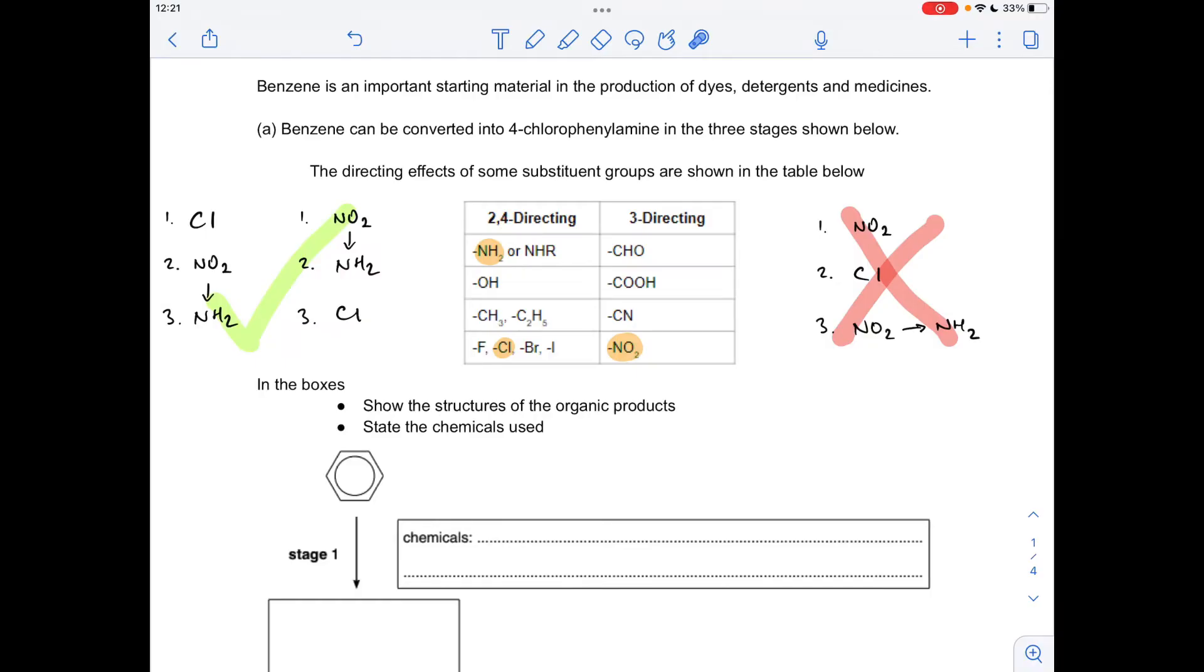So if you look at the way you can't do it, if you put the nitro group on first but then try and put the chlorine on, you can see the nitro group is a 3 directing group. So you're going to end up with the chlorine going on to position 3. And then obviously if you reduce the nitro group to the amino group, you've got the wrong product.